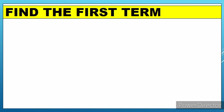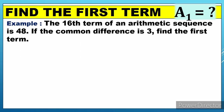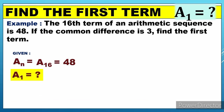Now for the second objective: find the first term, a sub 1. If the first term is unknown, here is an example. The 16th term of an arithmetic sequence is 48. If the common difference is 3, find the first term. The unknown here is the first term. The givens are: a sub n equals a sub 16, which is 48; a sub 1 is unknown; n equals 16; and d equals 3.